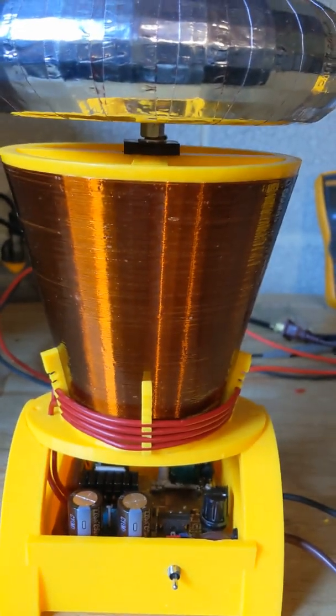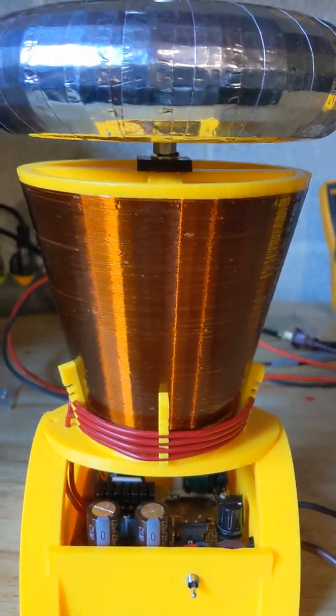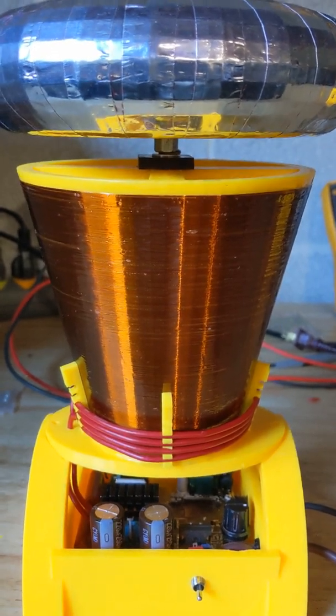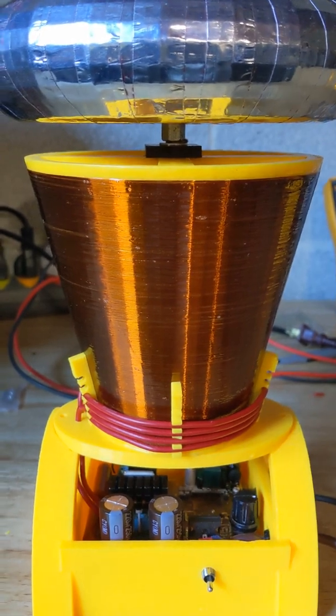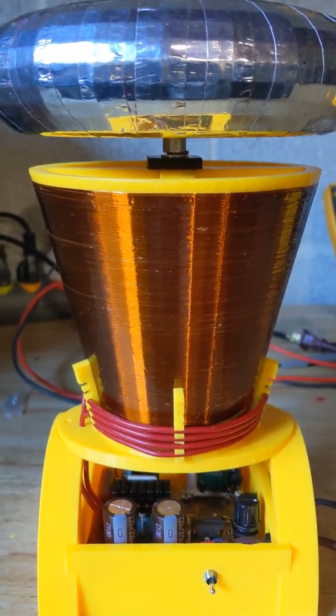The coil form for the secondary is 3D printed and it is 5 inches tall with a 3 inch diameter in the bottom and an almost 5 inch diameter on the top.